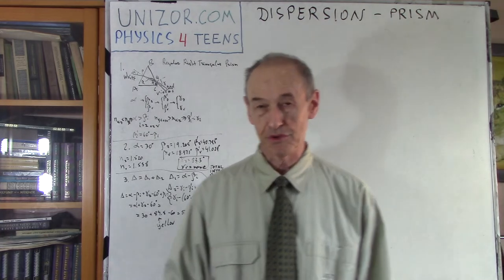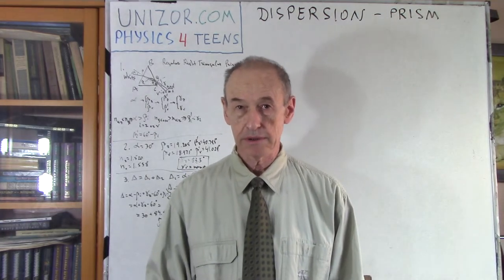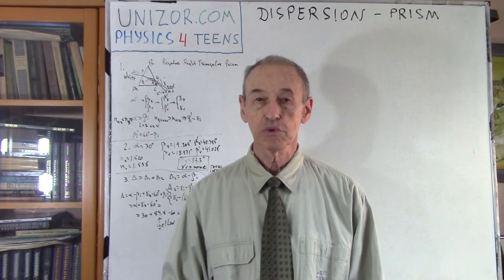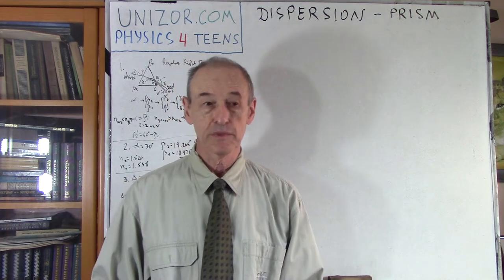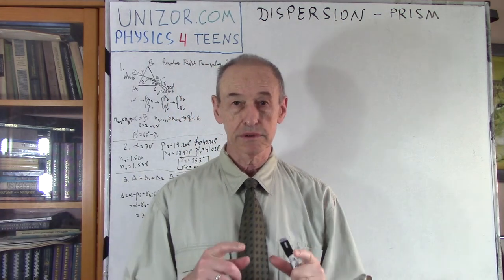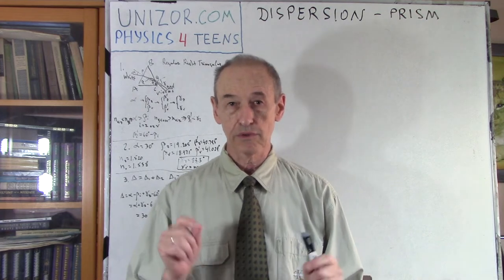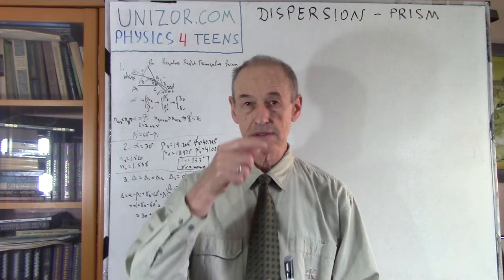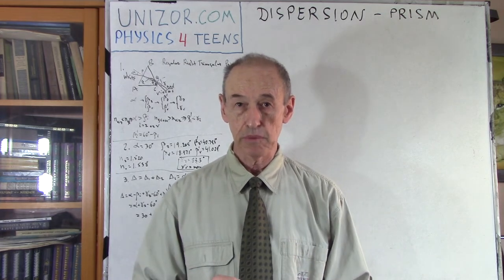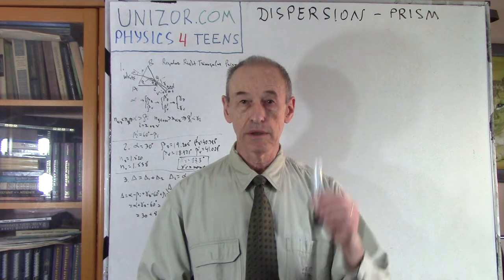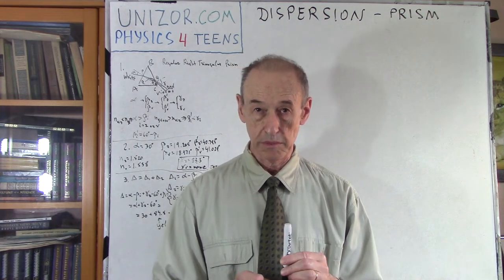Hi, I'm Zor. Welcome to Indizor Education. We continue talking about dispersion of light. Today's lecture will be about dispersion when light goes through a prism — specifically a right regular triangular prism where the bases are equilateral triangles and the edges are perpendicular to the bases.